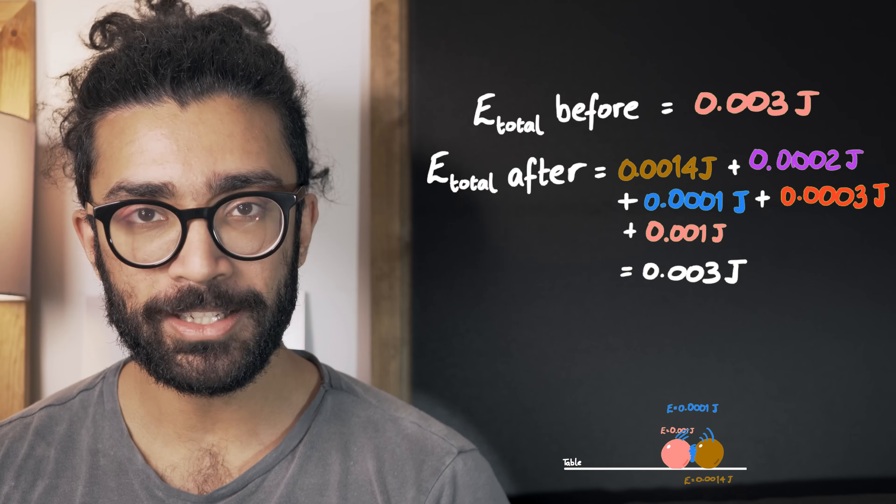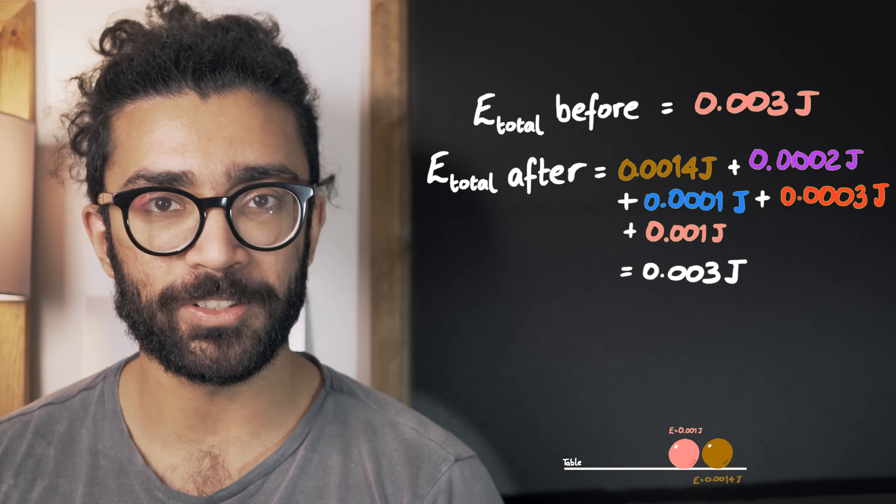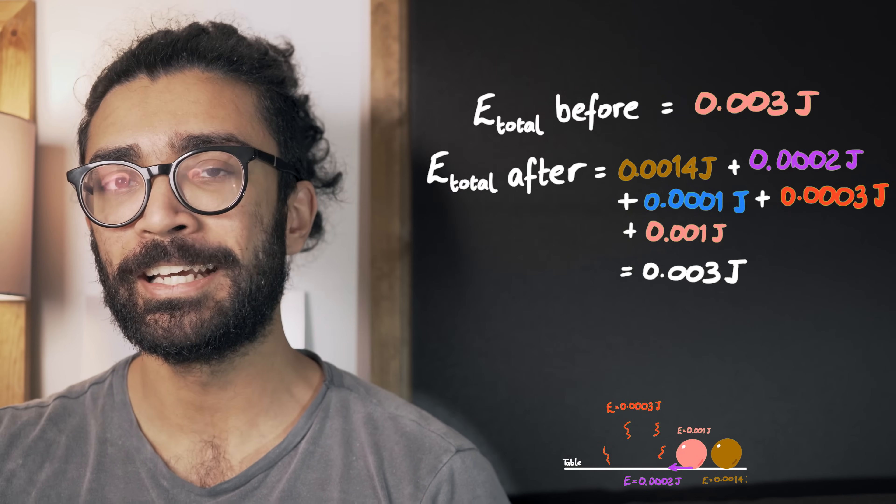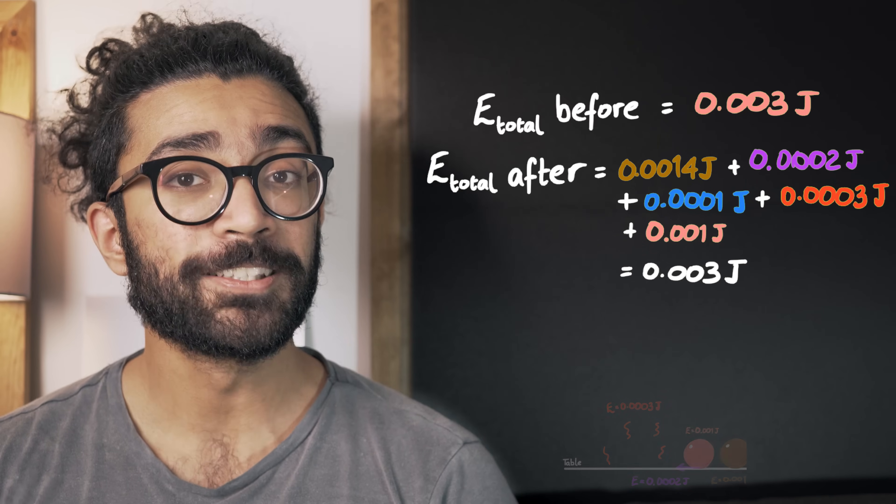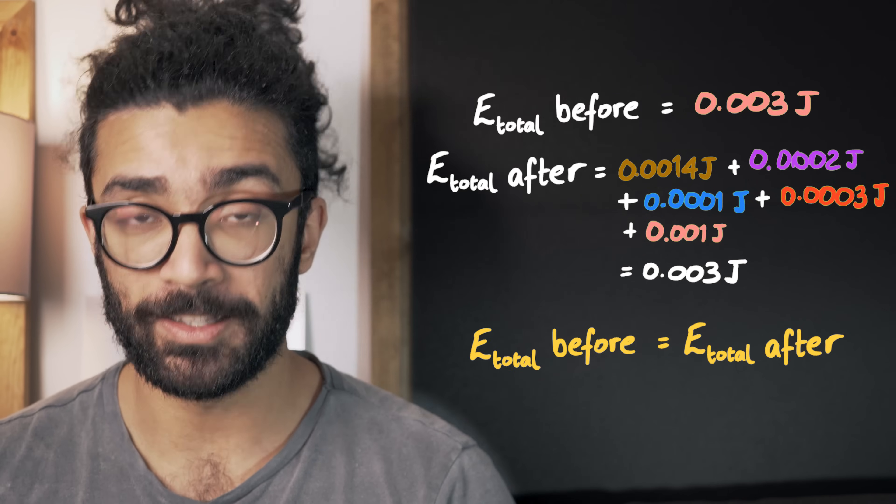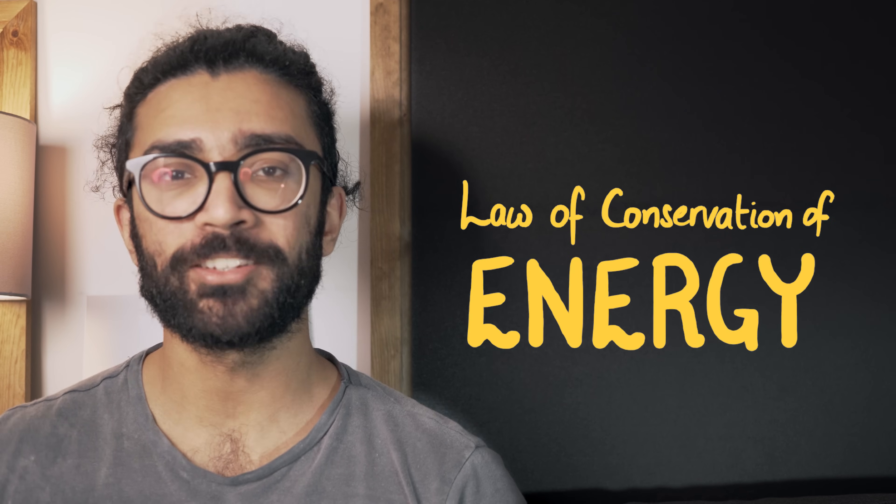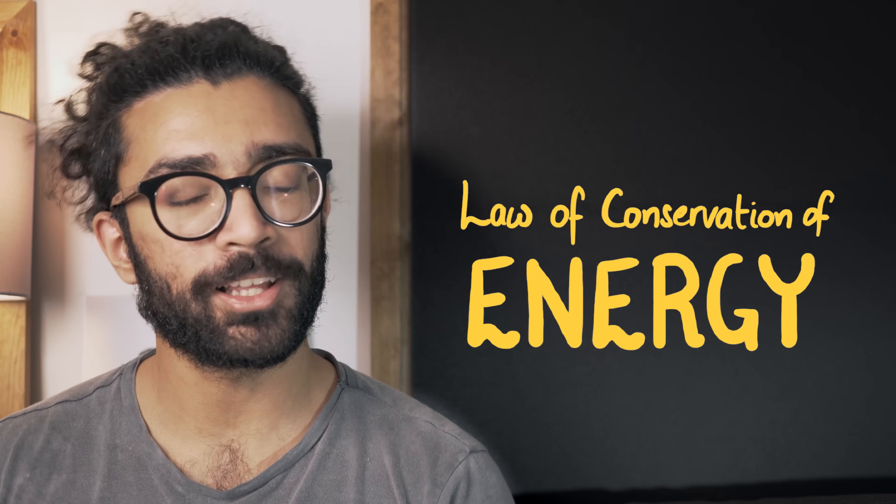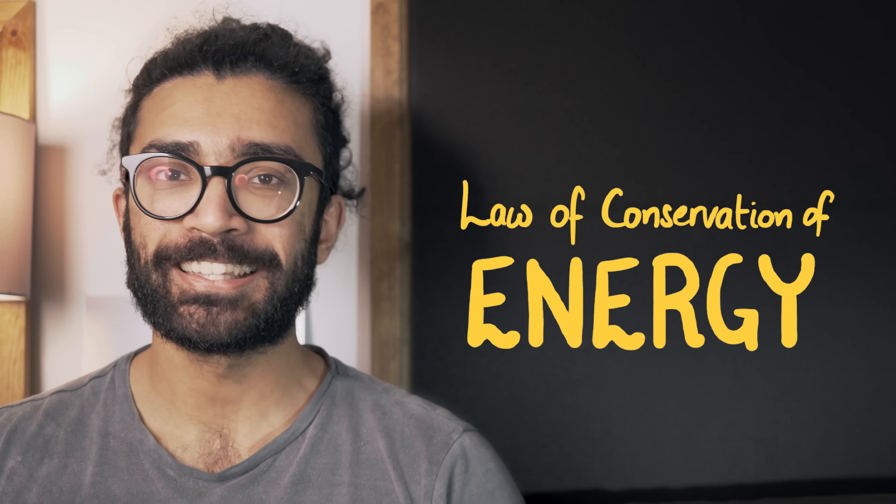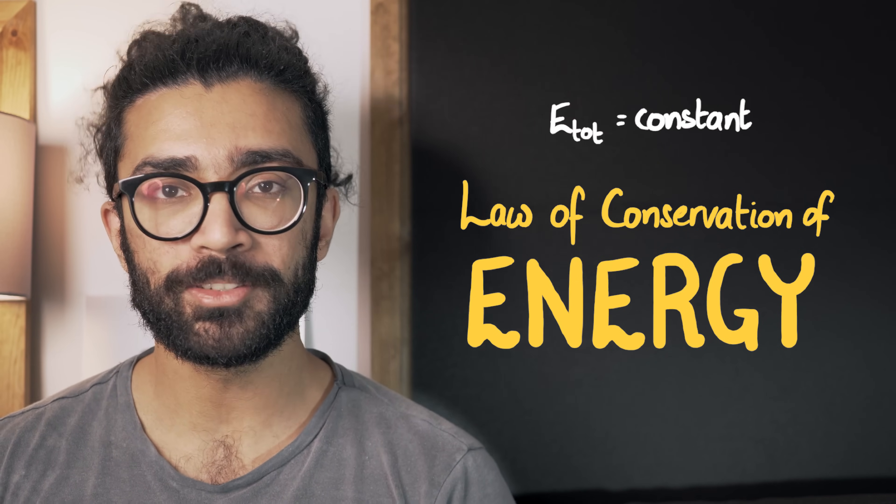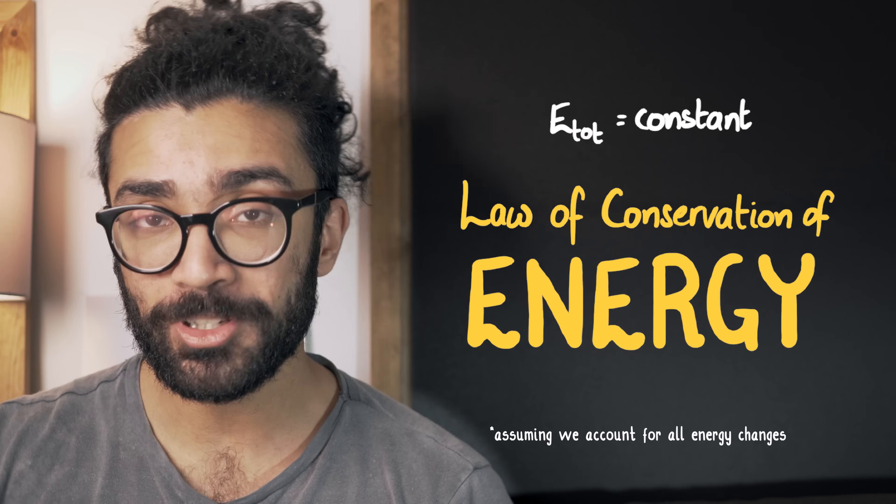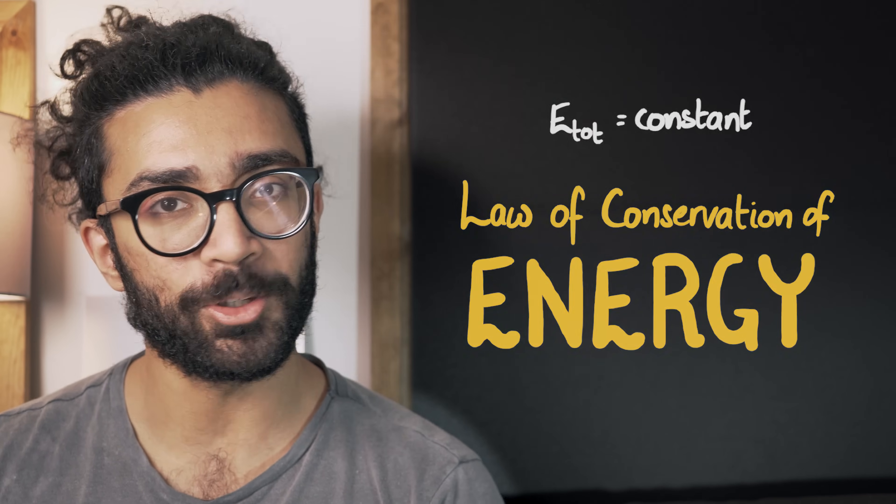But if we account for all of the energy changes and we look at the total energy of the system before anything happened and after something happened, the total energy seems to be exactly the same. It's constant. This idea is known as the law of conservation of energy. It seems like the universe behaves in such a way that the total energy of a system is always constant. And crucially, this allows us to make predictions about how certain things in the universe or the whole universe for that matter should behave in given scenarios.